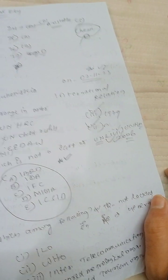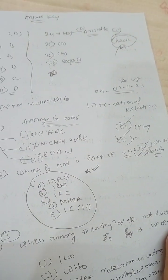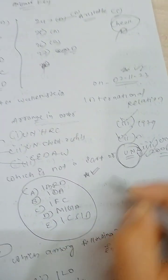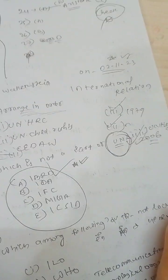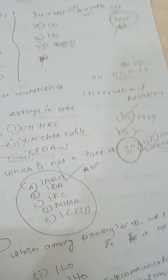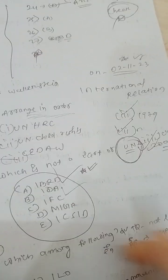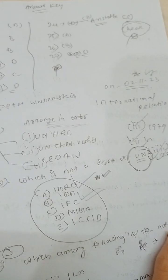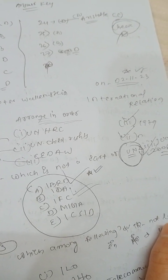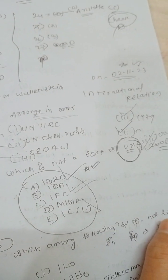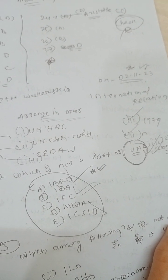The next question asks which is not a part of the United Nations. The United Nations includes the International Bank for Reconstruction and Development and the International Development Association (IDA). However, MIGA and ICSID are not part of the United Nations. So MIGA and ICSID are the answers — they are not part of the UN.